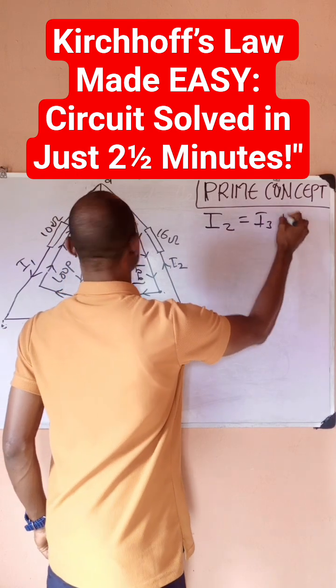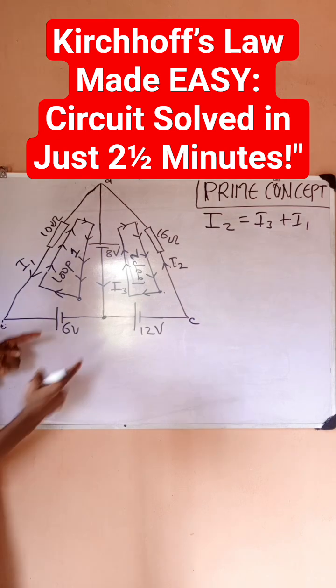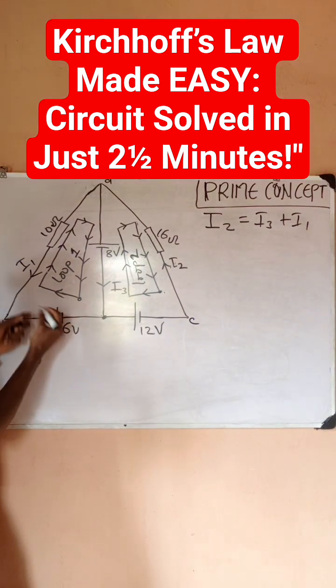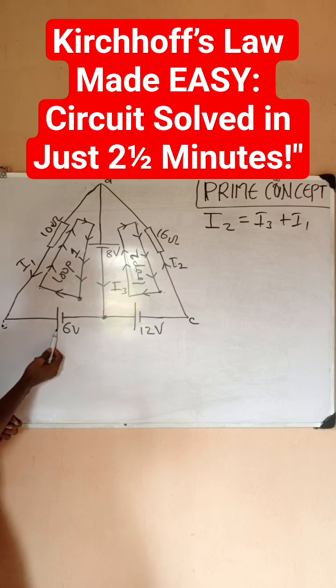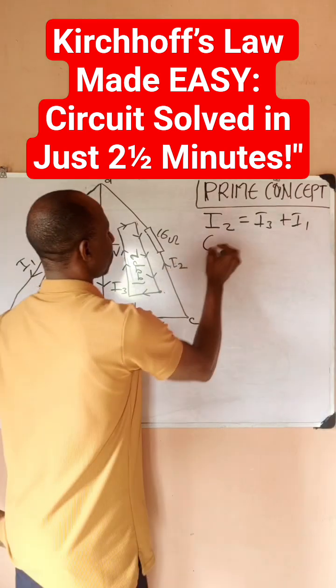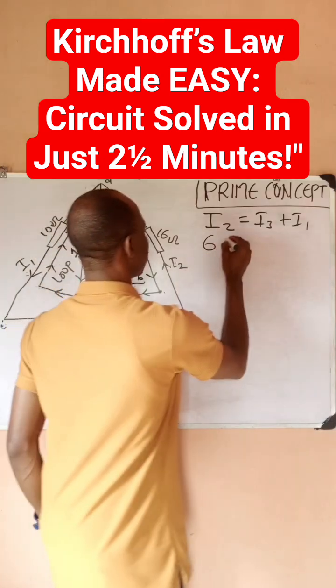The next thing we want to do is to analyze KVL for this first loop. I'm starting from this point, moving upward. My loop is going upward which is coming out from my positive terminal, so I have plus 6. If my loop goes this way, you notice that your loop and current are in opposite directions, that is positive. So plus 10 I1. Then when I'm coming down, my loop is coming down, it's coming out from my negative terminal.